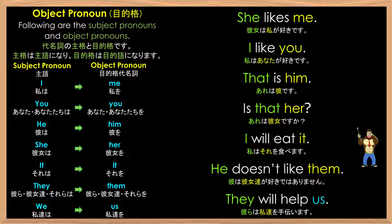Let's say the subject pronoun and object pronoun one time with the word 'like.' I will go through all of them. I like me. You like you. He likes him. She likes her. It likes it. They like them. We like us. This is a very good method to memorize all the words.